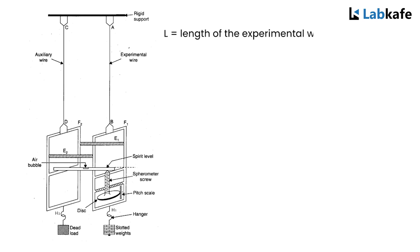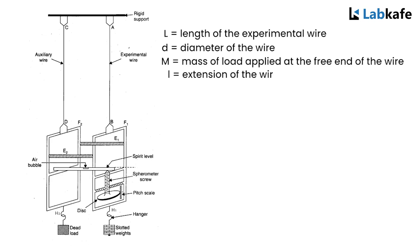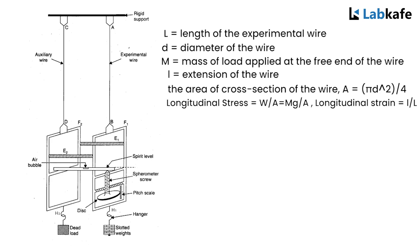Let L is the length of the experimental wire, d is the diameter of the wire, M is the mass of the load applied at the free end of the wire, l is the extension of the wire. So, the area of cross-section of the wire A equals pi d squared by 4. Therefore, the longitudinal stress is W by A equals mg by A and the longitudinal strain is l by L.